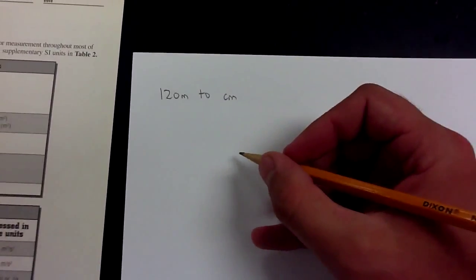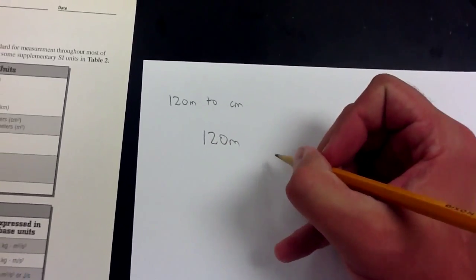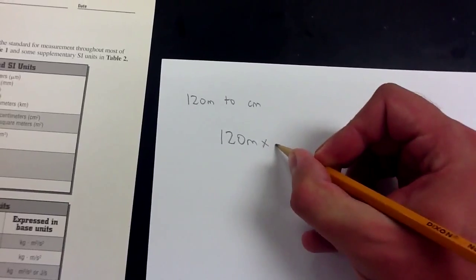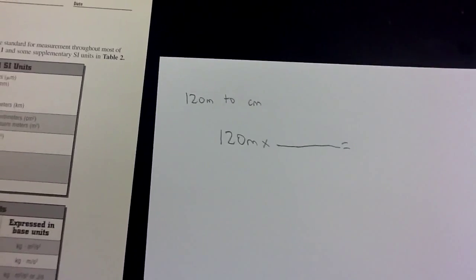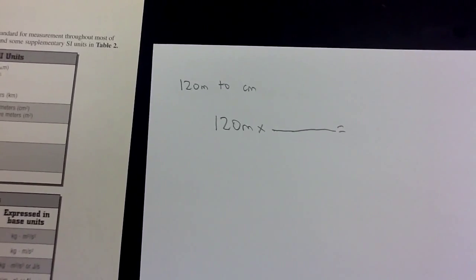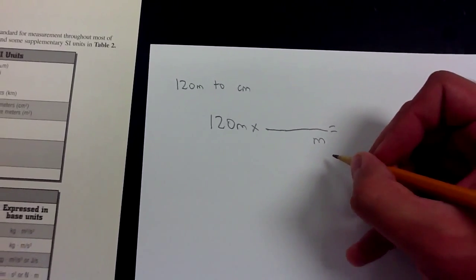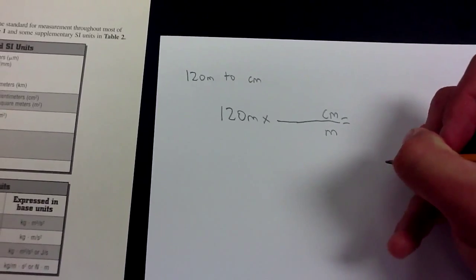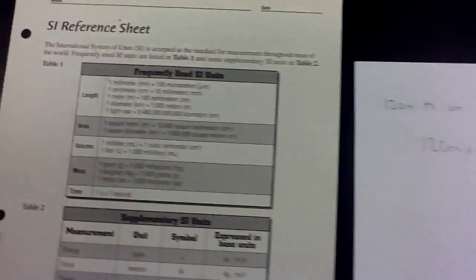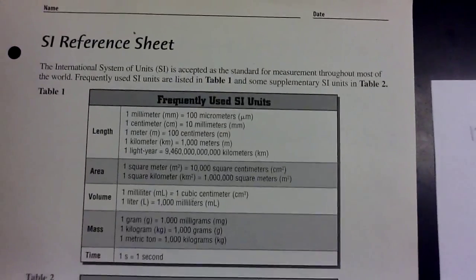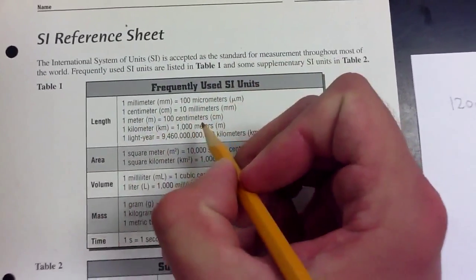Alright, first step for this one: take 120 meters and write that down — the number and the units of what you're converting. Times sign, line, equal sign. Next step, write what you started with on the bottom, which is meters, and write what you're converting to at the top, which is centimeters. Now look at the conversion chart for a conversion between centimeters and meters. We have that: 1 meter equals 100 centimeters.